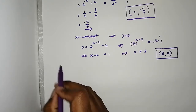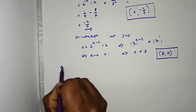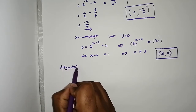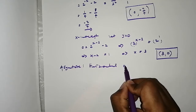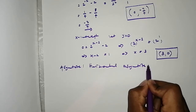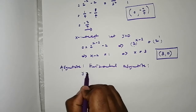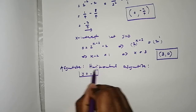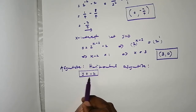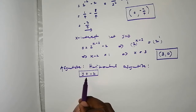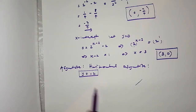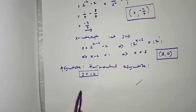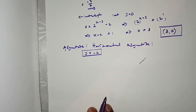Looking at our equation, we find the horizontal asymptote. It's going to be y = negative 2. The function is not defined at y = negative 2, so this is the horizontal asymptote. The function will actually approach this line y = negative 2 but it will never touch it.